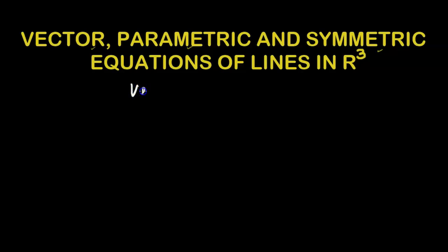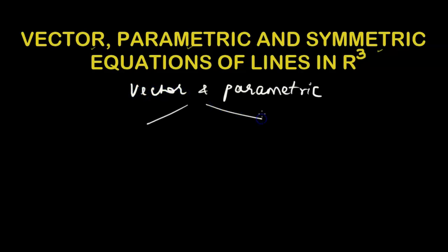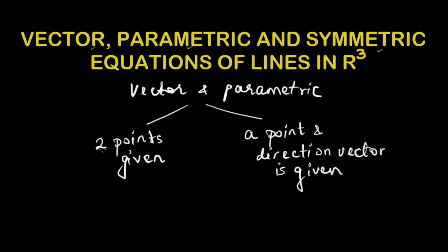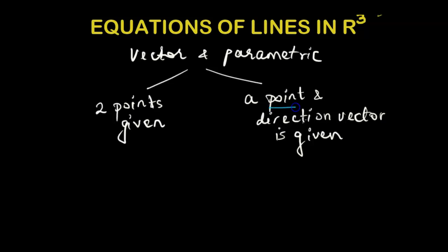To find the vector and parametric equation we need two ways. One is two points given, and one is when a point and direction vector is given. If we're given a point and a direction vector, we would be given the point in R3, that means we would be given x, y and z coordinates for it.